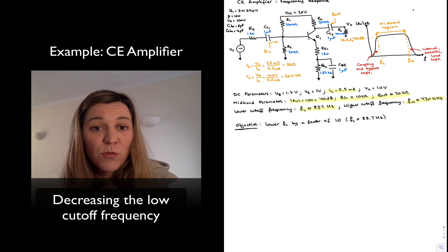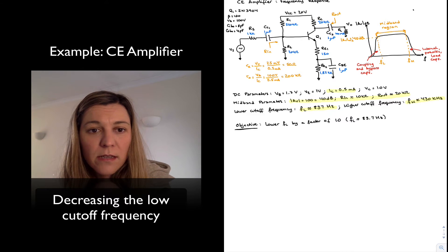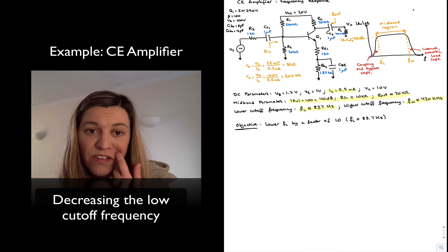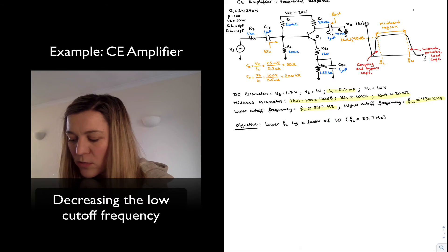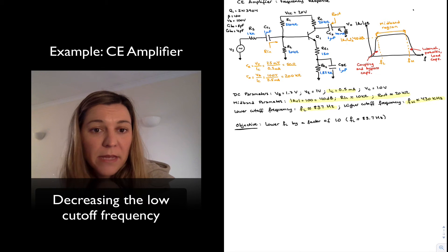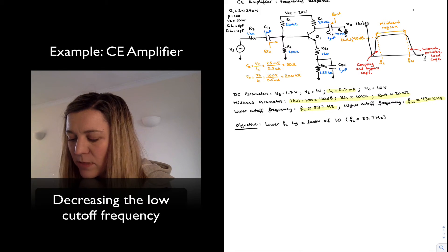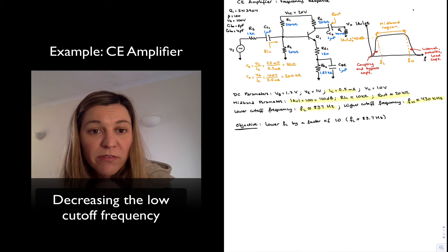And in that case, we will need to look at what is the dominant capacitance, the one that is setting the value of FL at 837 Hz. And if you go back through the analysis, you'll see that it was the bypass capacitor at the emitter.